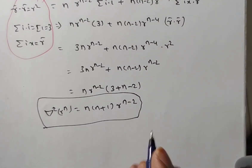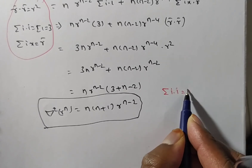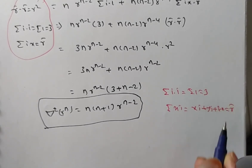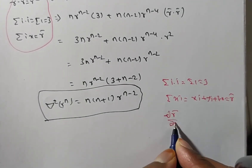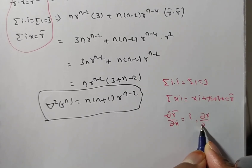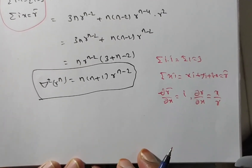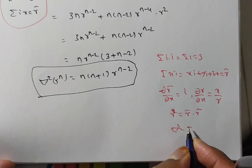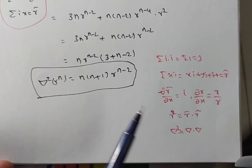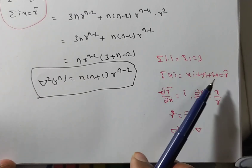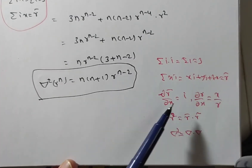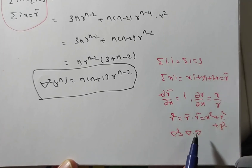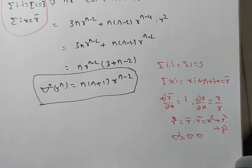To summarize the useful formulas used: summation(i·i) = 3; summation(xi) = xi + yj + zk = r̄; ∂r̄/∂x = i; ∂r/∂x = x/r; r² = r̄·r̄; del² = del·del. Using these basic identities, the problem can be solved very easily.